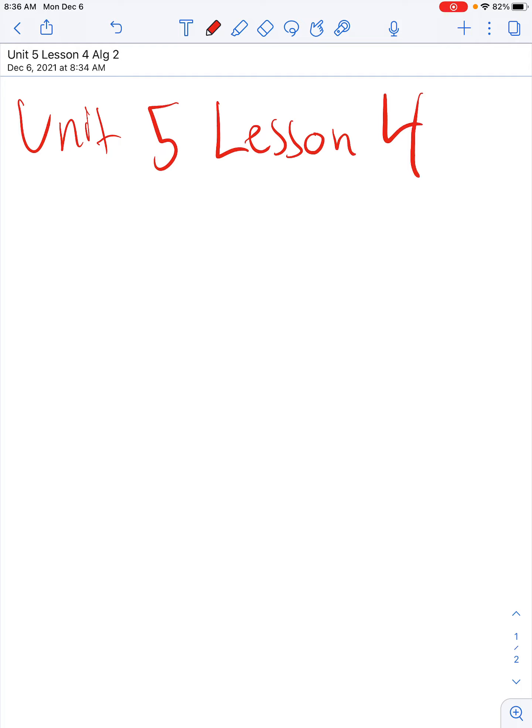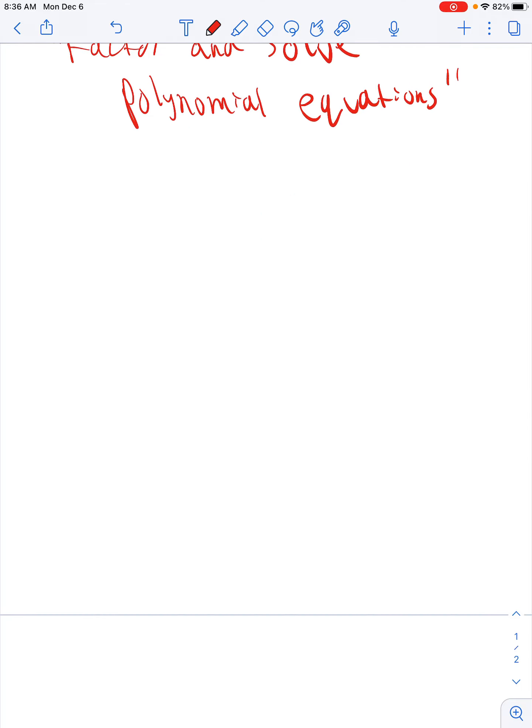Alright, Algebra 2, Unit 5, Lesson 4. We're going to be working with factoring again. We are going to be factoring and solving polynomial equations. We've done factoring a lot throughout the year in different ways. What we're really trying to do is factor a polynomial down completely, and that happens when it's written as a product of unfactored polynomials with integer coefficients. For example, here's an example of a polynomial that's factored completely because we cannot break that down any further.